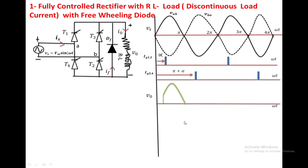At pi, the output voltage is subject to negative voltage. With that polarity — minus on one side and plus on the other — the freewheeling diode becomes forward biased and conducts. Once the diode conducts, the load current is transferred from T1 and T2 to DF. T1 and T2 will turn off because the current is transferred to DF.